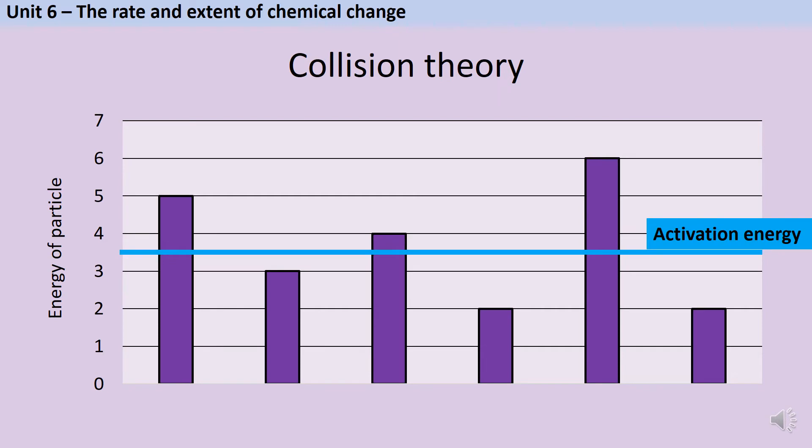Here's another way of visualising this. In a solution, there will be millions of different particles, but here I've just shown six. The particles have different amounts of energy. Some of them have more than the activation energy, that minimum threshold that they need to react. To make this easier to see, I've shown the ones that do have the activation energy in green. So those three particles, if they collide with another particle, will be able to react. But the three particles that are shown in red won't react even if they do collide, because they don't have sufficient energy.